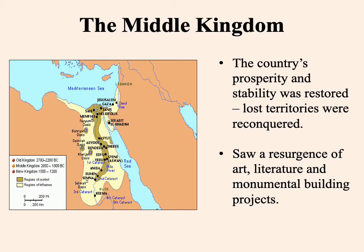The Middle Kingdom is in some ways perhaps the period during which Egyptian culture most flourishes. Whatever developments were underway during the Old Kingdom pretty much become consolidated. It is a very prosperous period with a high level of stability. The first order of business was recovering lost territory, but what characterizes the Middle Kingdom more than anything is that it sees a resurgence of art, literature, and monumental building projects.